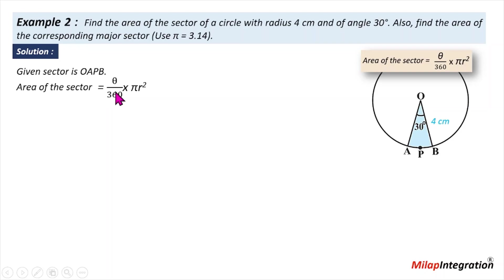As we know, the area of the sector is theta upon 360 into pi R square. R value is 4, so 30 upon 360 into 3.14 times 4 times 4, because it is R square. The unit is in centimeter, the radius is in centimeter, so it is in centimeter square.